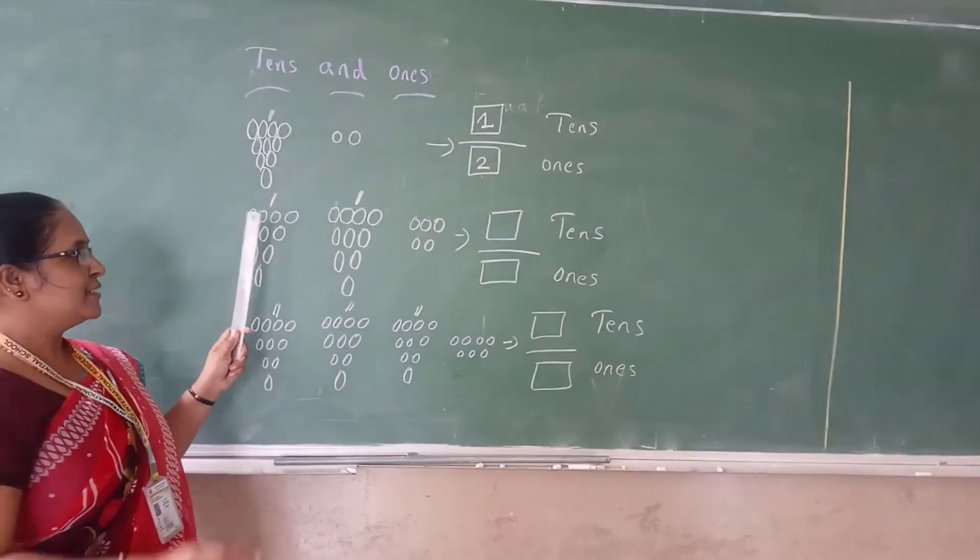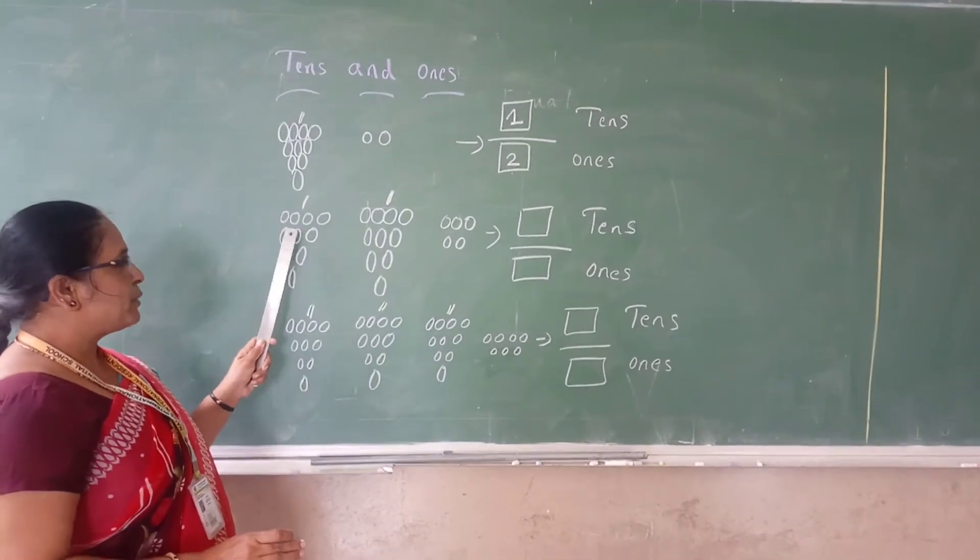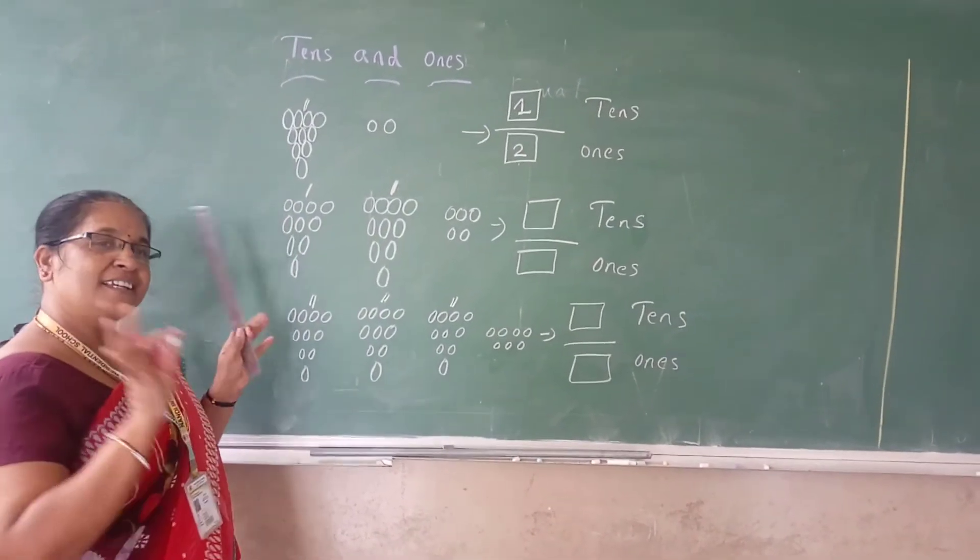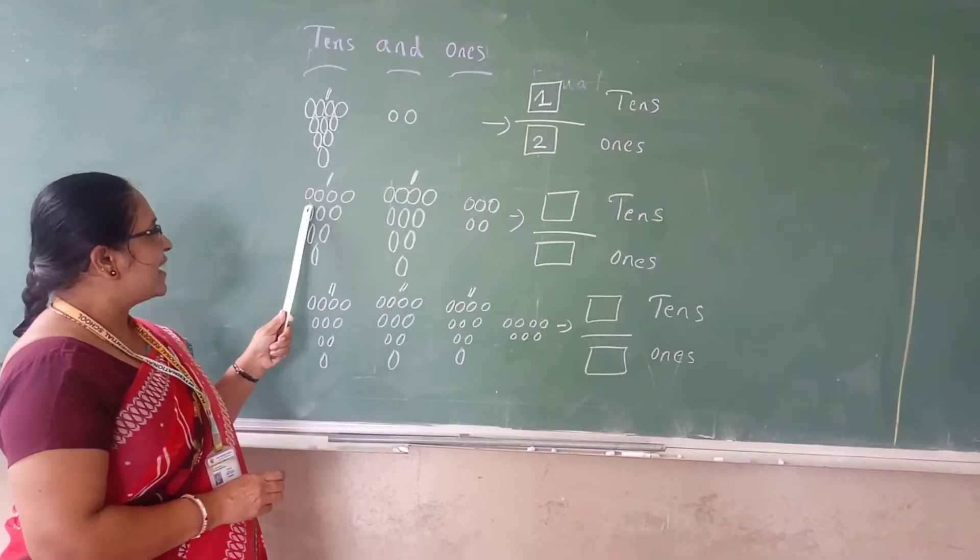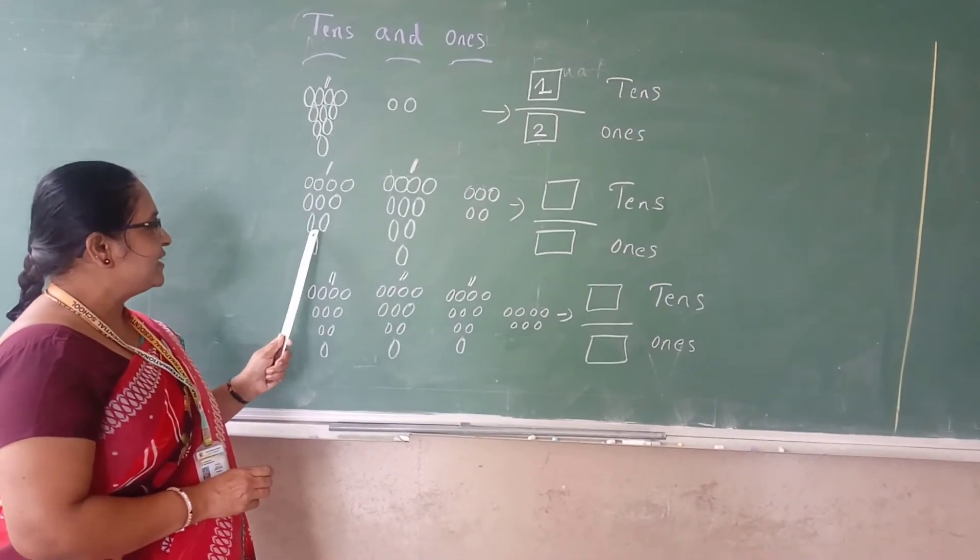How many groups are there here? 2 groups are there. In one group, how many are there here? And please, just you go on counting. 1, 2, 3, 4, 5, 6, 7, 8, 9, 10. Okay.